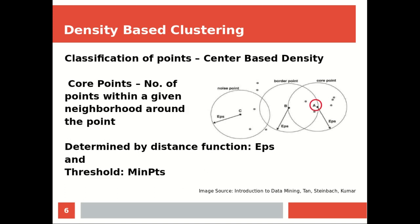The core point is defined by the number of points within a given neighborhood around a particular point. It is determined by the distance function or radius EPS and a threshold — you define the minimum points as a threshold. If there are enough points around a particular point, then it will be a core point; otherwise, it will not be a core point.